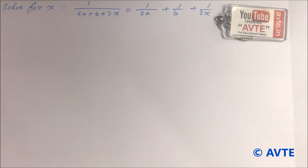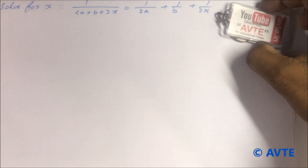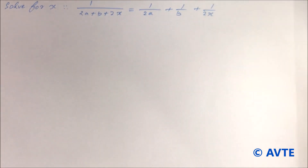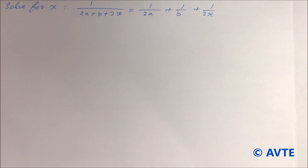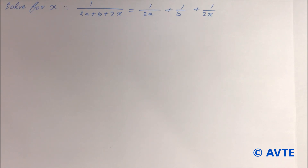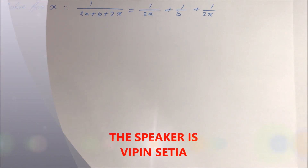Hello friends, welcome to the channel AVTE. We are solving a question of quadratic equation: solve for x, 1 upon 2a plus b plus 2x is equal to 1 upon 2a plus 1 upon b plus 1 upon 2x.